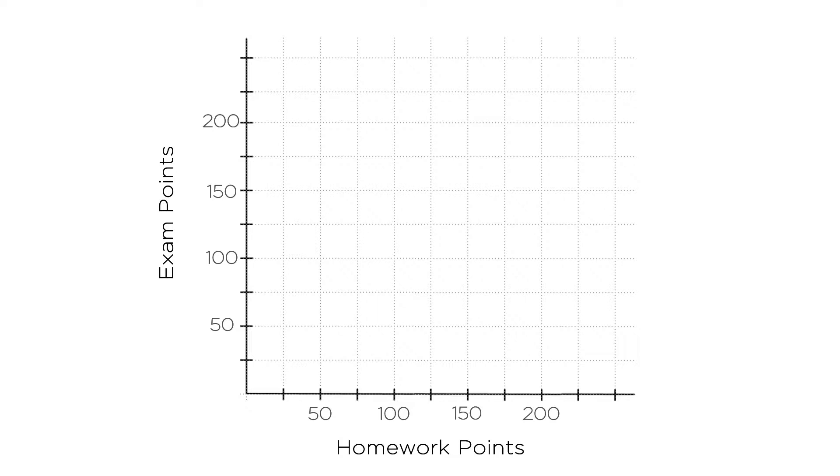This is like the typical trade-off graph we've seen for consumers deciding between two goods to consume, but now it's for producers deciding between two goods to produce. In this case, you are the producer.